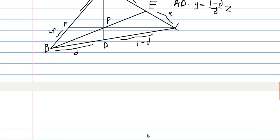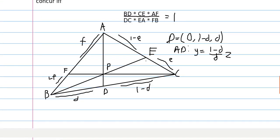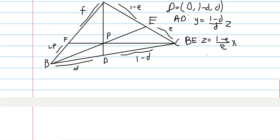Let's see, I'm going to need more space. So similarly we know that the line BE has the form Z equals 1 minus E over E times X. So I'm sort of skipping some steps here but I encourage you to write out all the equations of the points and reason through these equations. And CF has the form X is equal to 1 minus F over F times Y.